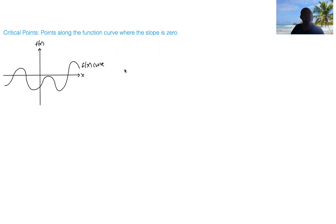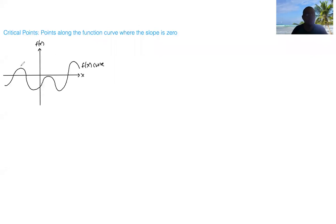We learned this before when we were plotting the curve of our derivative based on some plot of f of x. We said previously that the slope is zero at the pits and at the peaks. So you would expect the slope to be zero at that peak, this pit or trough, this peak, this peak, and at this pit.